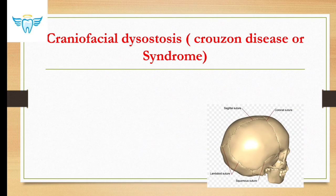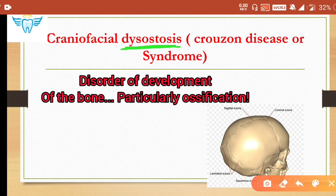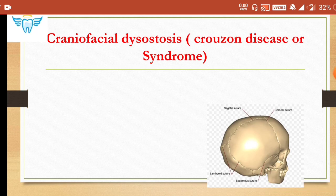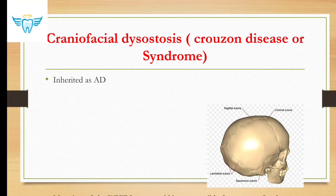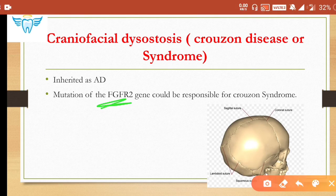Let's begin with craniofacial dysostosis, famously known as Crouzon disease or Crouzon syndrome. The term 'dysostosis' means a disorder of bone development affecting ossification. When you understand the terms, it is easy to remember the features. It is inherited as an autosomal dominant disease, and mutation of the FGFR2 gene can be responsible for Crouzon syndrome — important for MCQs.